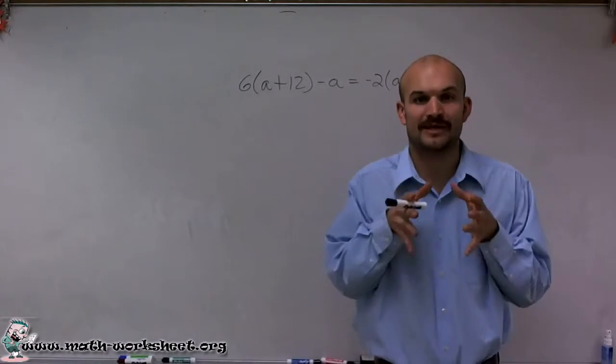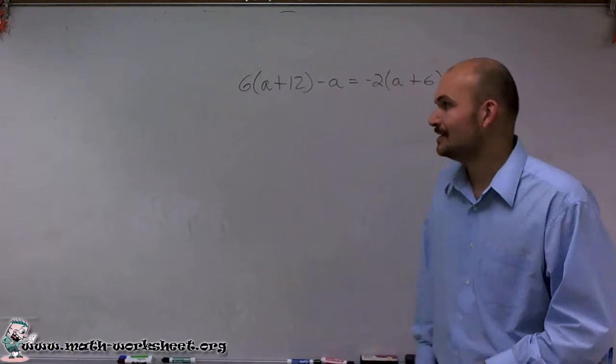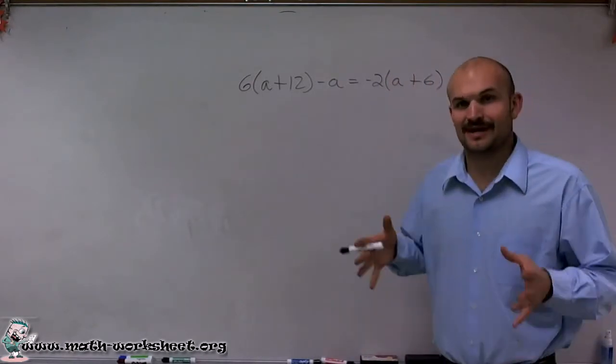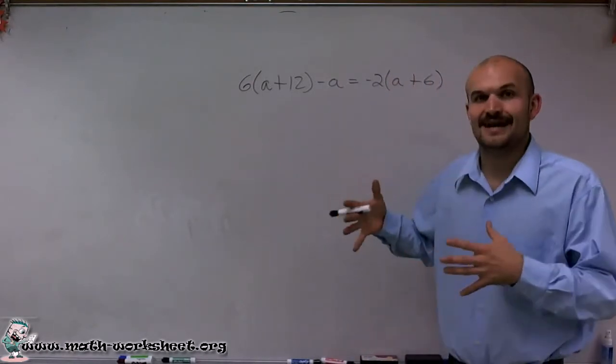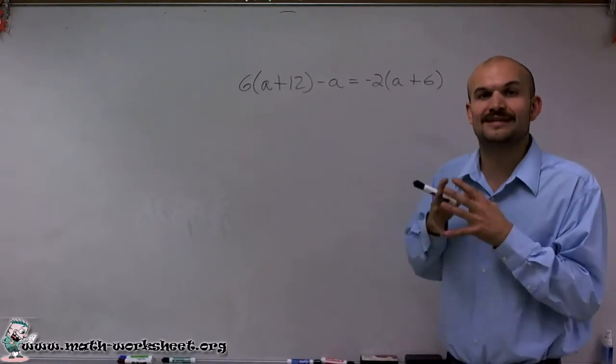Now remember when solving, want to isolate the variable, get one variable by itself on one side of the equation. So I have a couple options. I need to see which one of these a's, how am I going to get them all by itself? Or what am I going to do to get the a by itself?